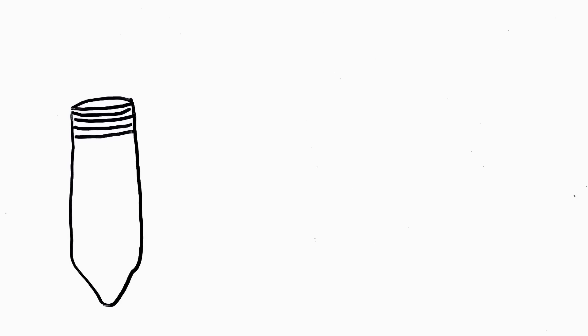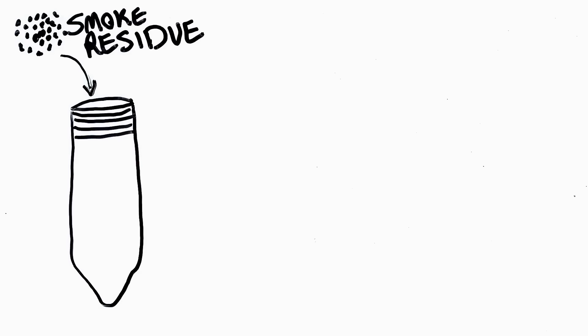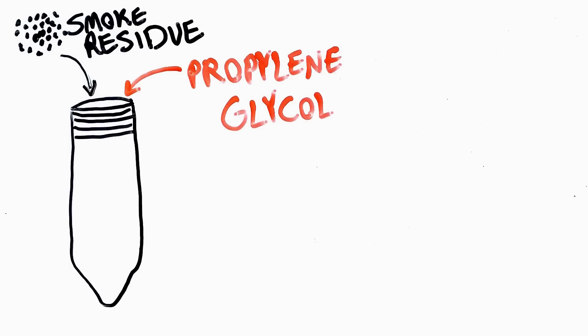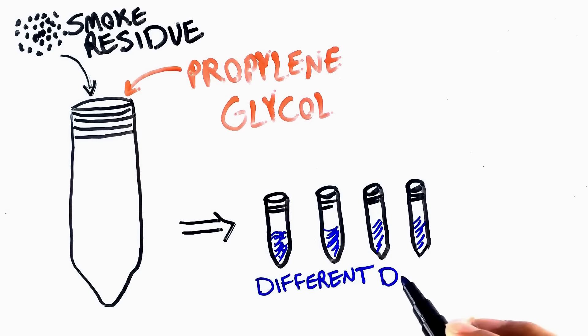Then they re-suspended the accumulated smoke with propylene glycol and diluted the solution to a number of different concentrations.